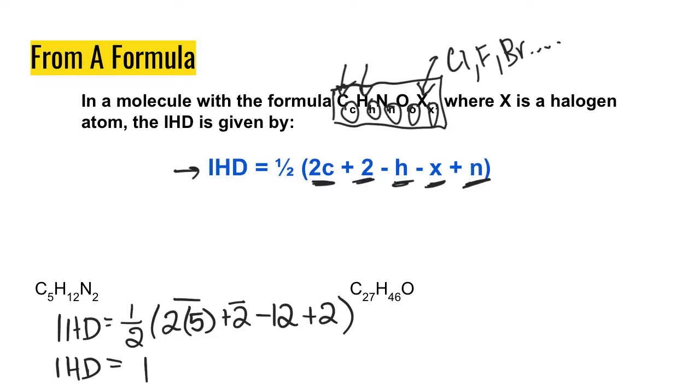So what that means is it gives us a little bit of information about the structure. It tells us that this structure could potentially have a ring, or it could have a double bond, because both of those have an IHD of 1. And we would need to then use more information from some of the other spectroscopy techniques to figure out exactly what the structure is.